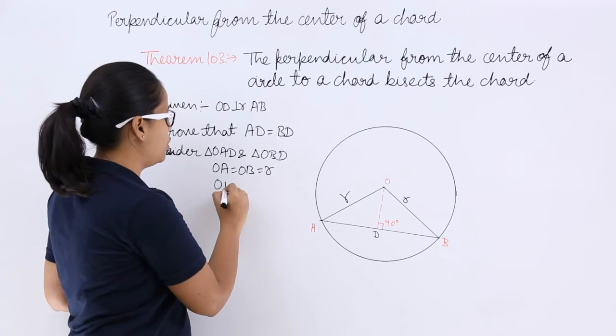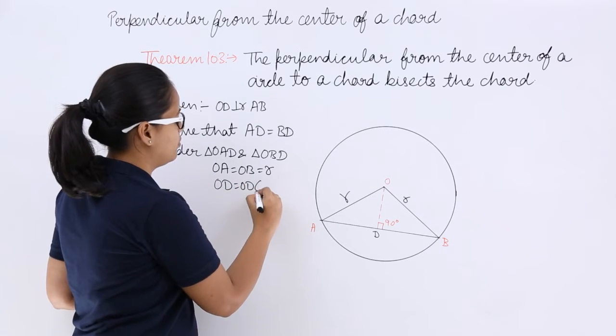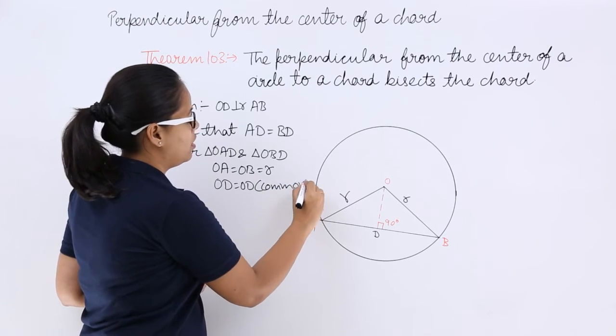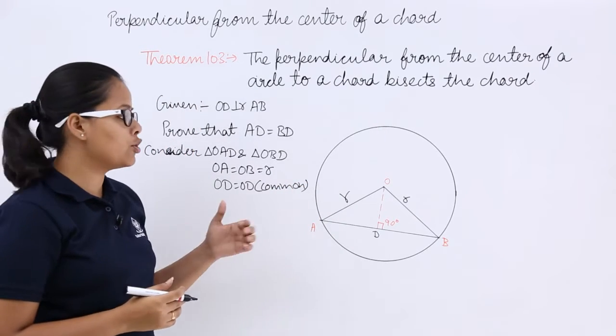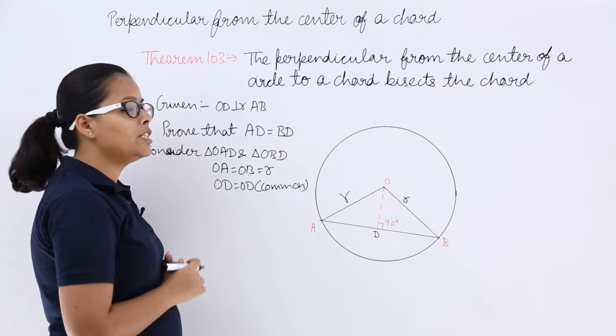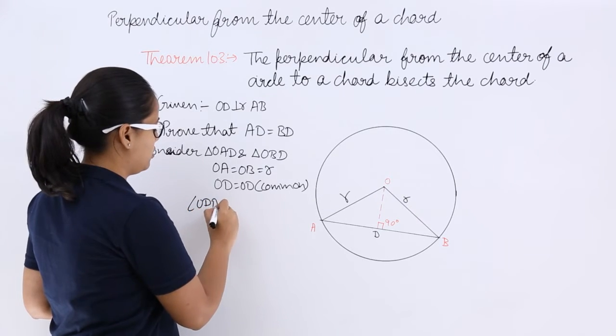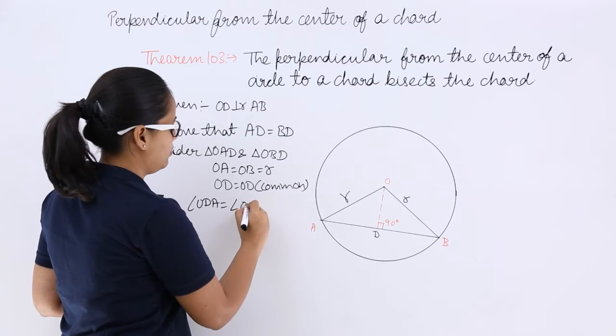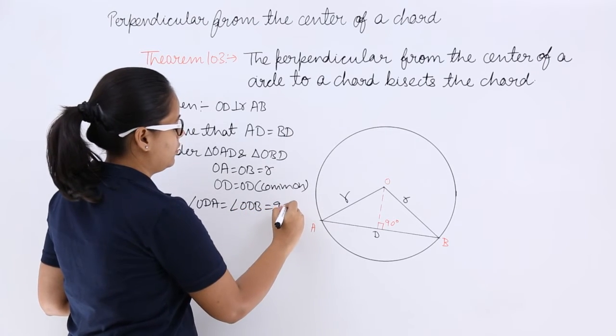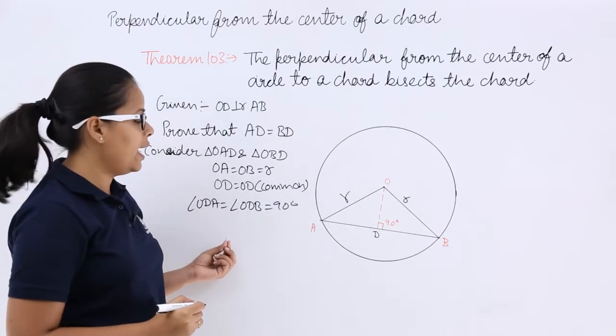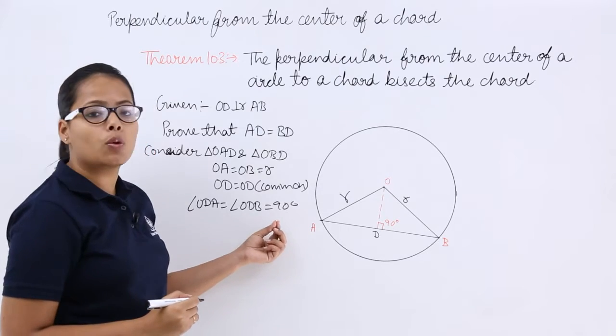You know that OD is equal to OD - this is the common side between these two triangles. What else? You know that angle ODA is equal to angle ODB, which equals 90 degrees.